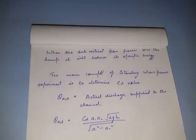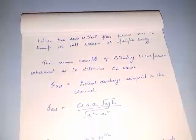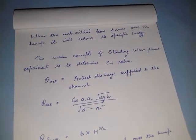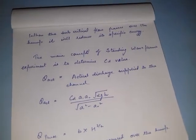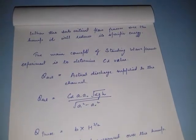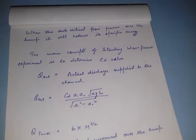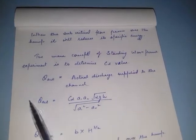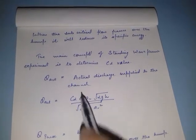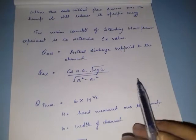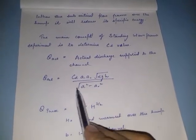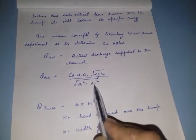The main concept of standing wave flume experiment is to determine the CD value. CD is coefficient of discharge. We can calculate coefficient of discharge using the formula: CD equals Q actual upon Q theoretical. Q actual is the actual discharge supplied in the channel. Q actual equals CD times A1 A2 square root 2gh divided by square root of A1 squared minus A2 squared.